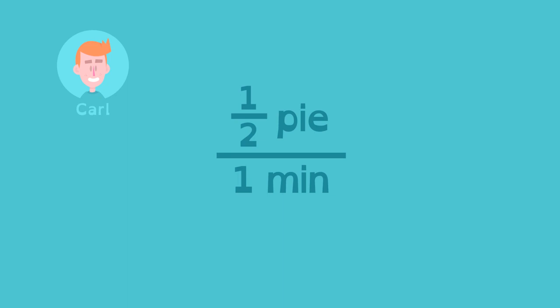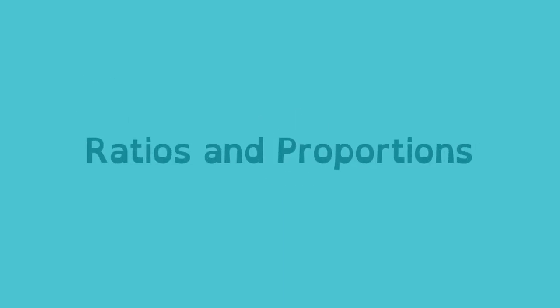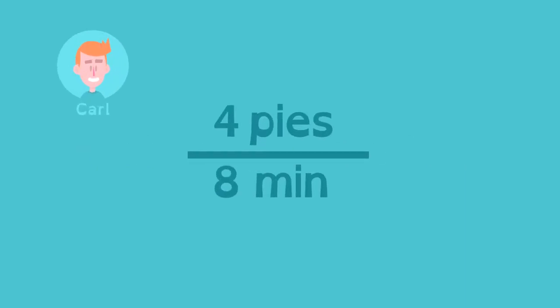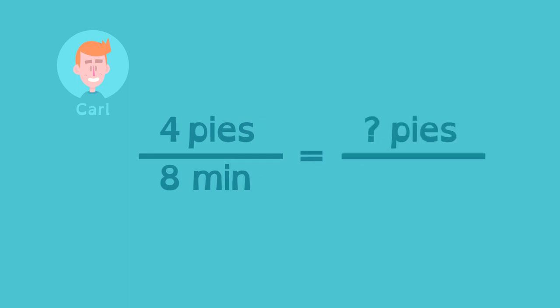Ratios and proportions show us the math behind unit rate. If Carl eats four pies in eight minutes, how many pies would he eat in one minute? In other words, what is his unit rate? Since a unit equals one, we need to divide eight by eight to get one.